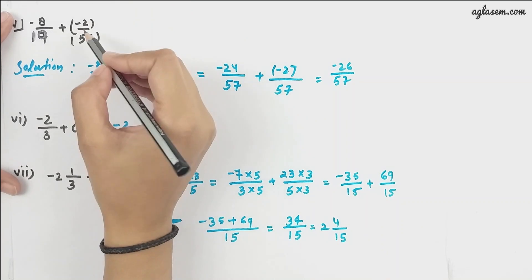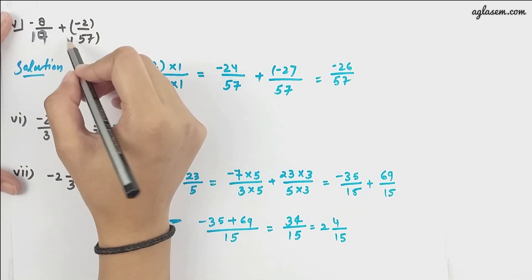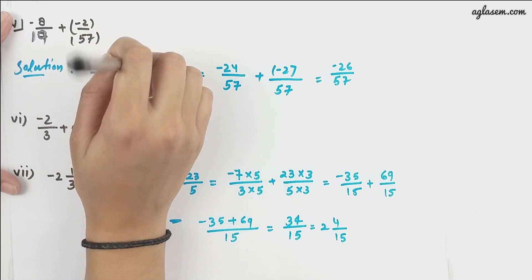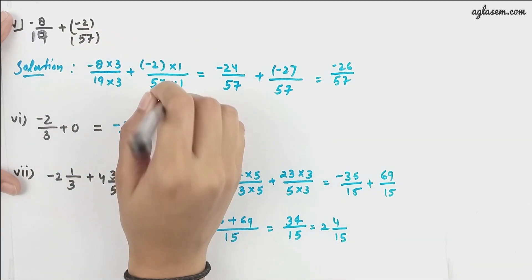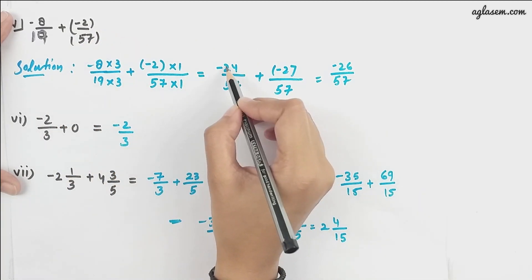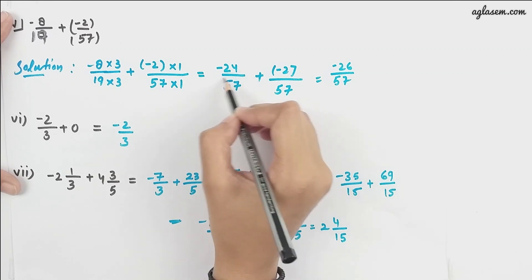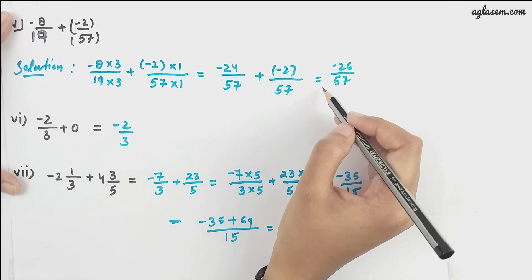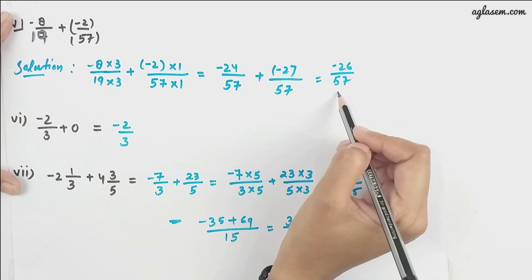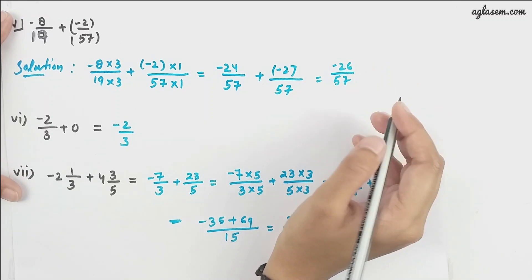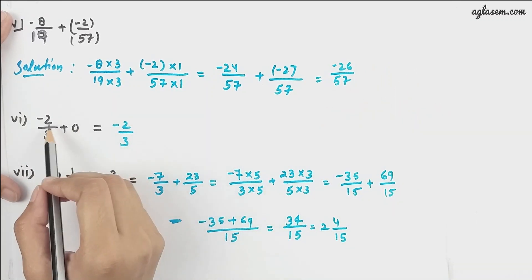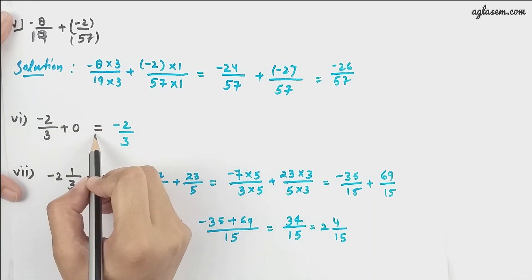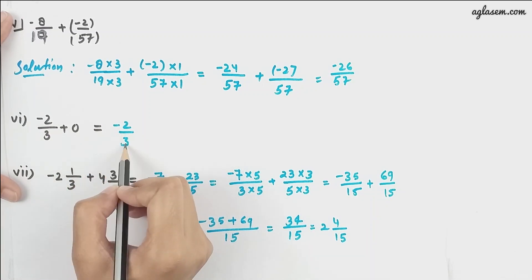Moving further, we have -8/19 plus (-2/57). We make the denominator the same, giving us -24/57 plus (-2/57), so our answer is -26/57. Next, -2/3 plus 0, which is very easy and equals -2/3.